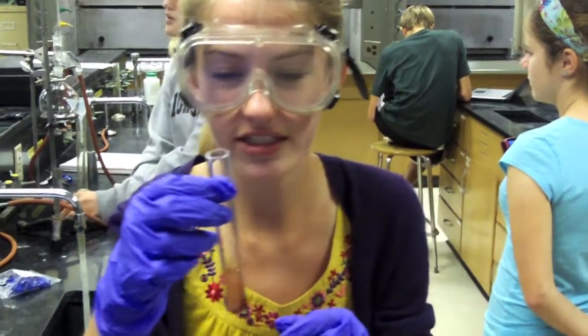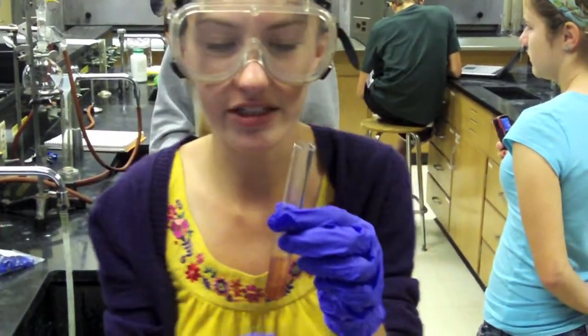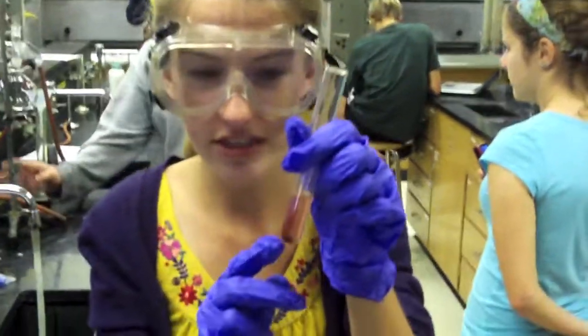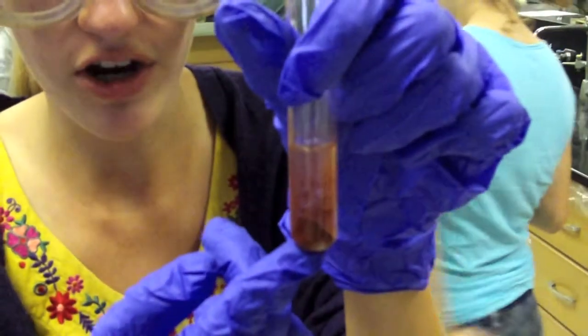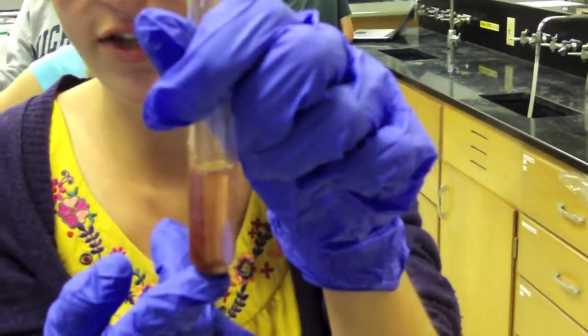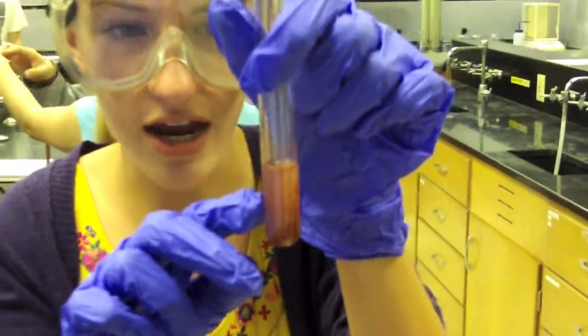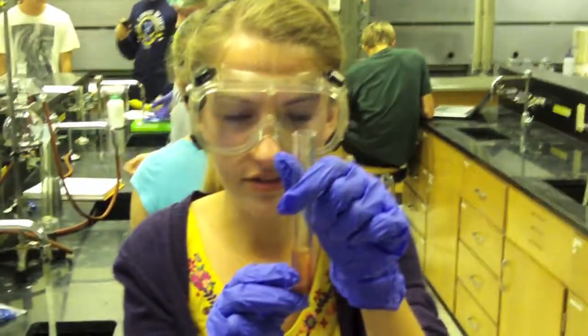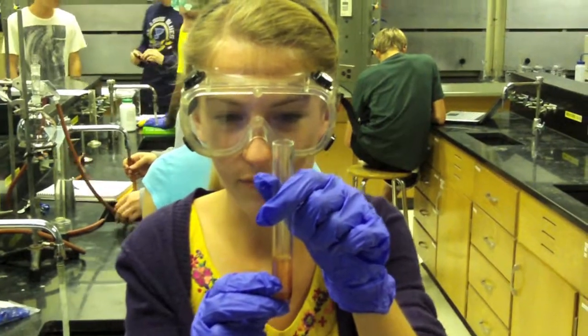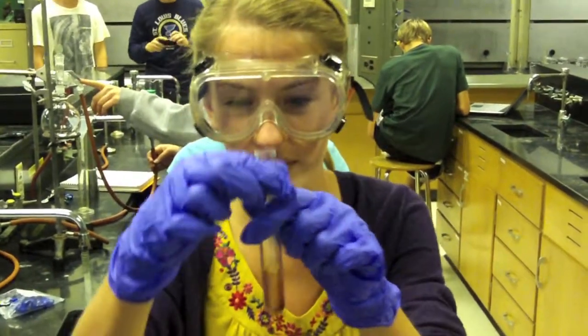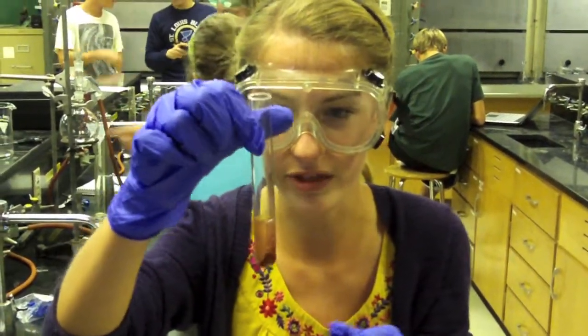While it was in the centrifuge, it underwent a double replacement reaction. This substance, the chalky looking stuff, that is the silver chromate. And then the liquid, towards the top, that is the potassium nitrate. They separated with a double replacement reaction.